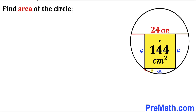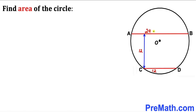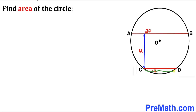Now let's focus on this chord. Its length is 12, and moreover the distance between these two chords is 12 centimeter as well. In this next step we are going to focus only on these two chords. The distance between them is 12, and we know that this bigger chord AB is 24 centimeter, whereas this smaller chord CD is 12.